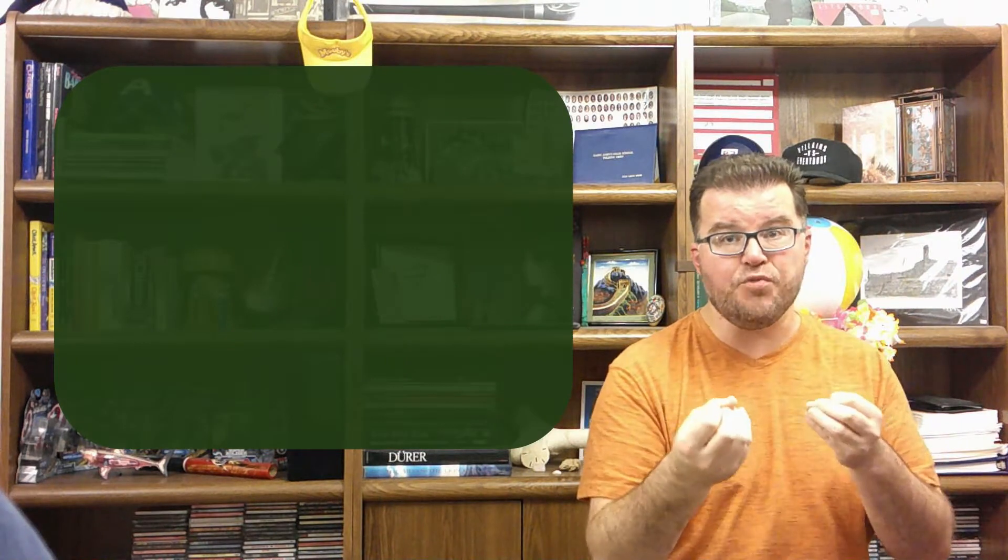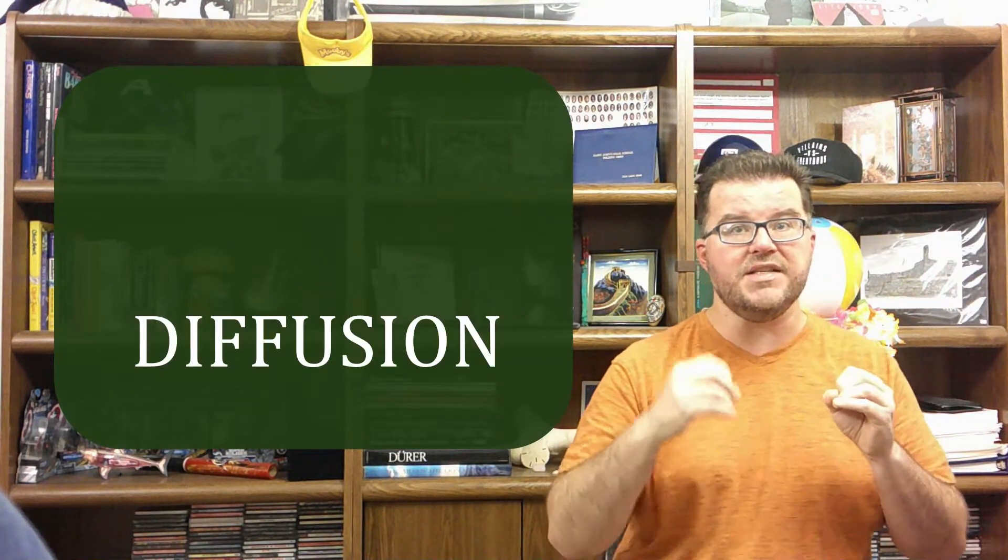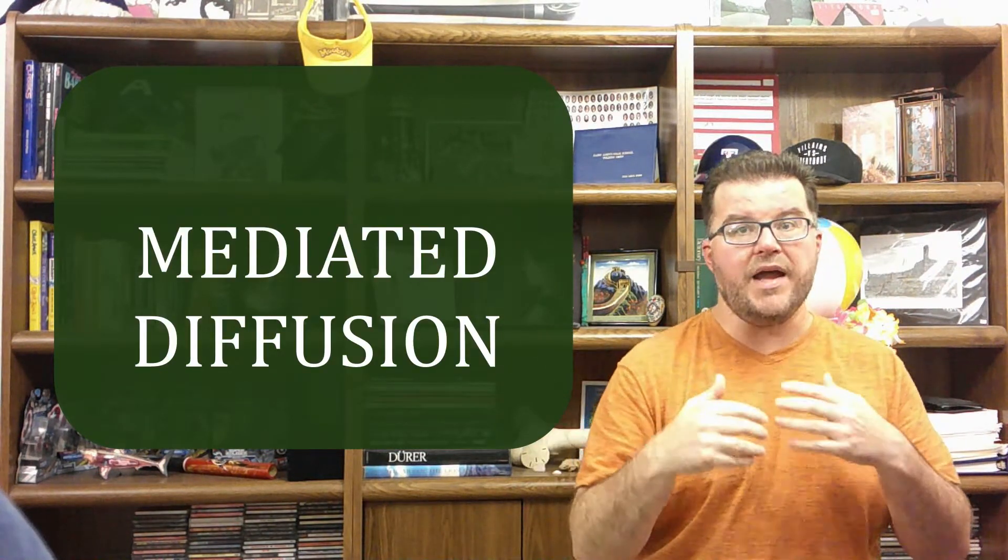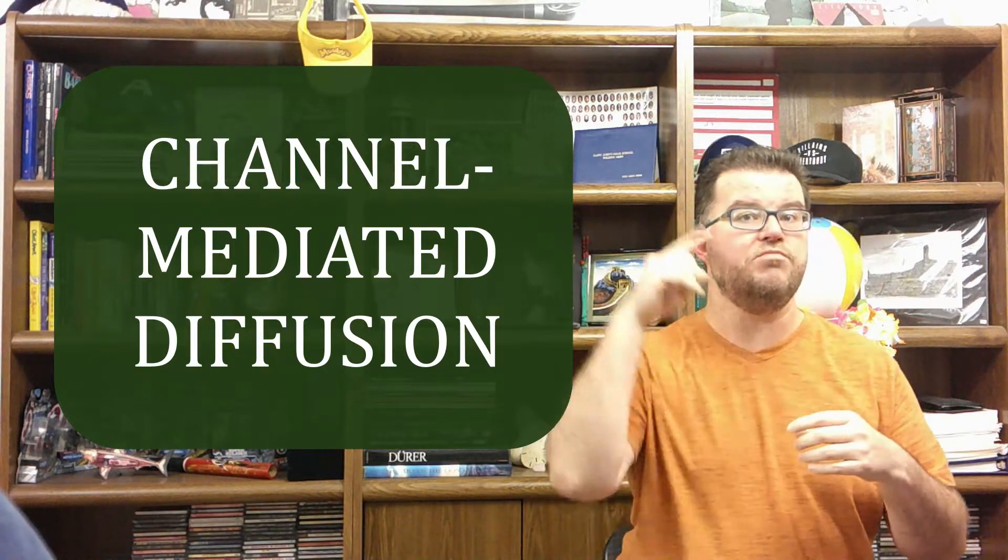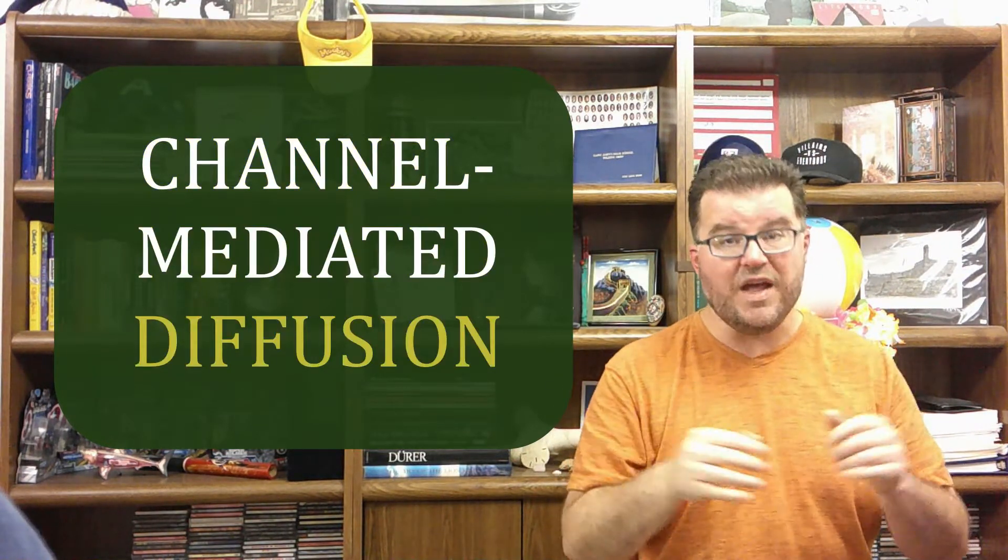This is a follow-up to my videos on membrane permeability and on simple diffusion. What we're getting at in this video is ways in which substances that are not able to engage in simple diffusion can passively move through the membrane. One of the ways that can be accomplished is with the assistance of things called channel proteins. So we're going to see a passive process, diffusion, that is assisted or mediated by channel proteins. Hence it's channel-mediated diffusion, and that's what we're looking at.